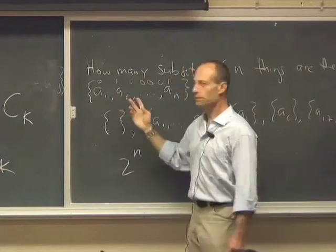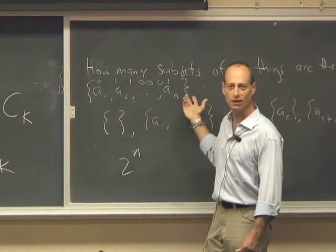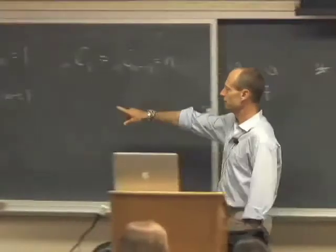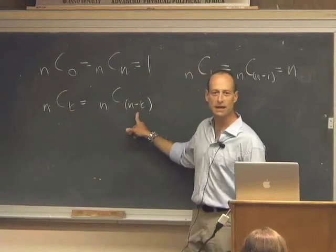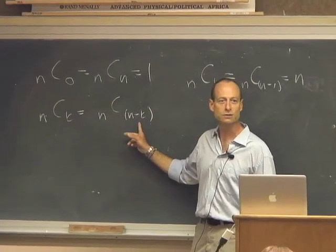Picking two things to be in the set is completely equivalent to picking n minus two things not to be in the set. That's what this is expressing. Picking k things to be in your subset is equivalent to picking n minus k things not to be in your subset. There's the same number of ways of doing those two things. They're equivalent.